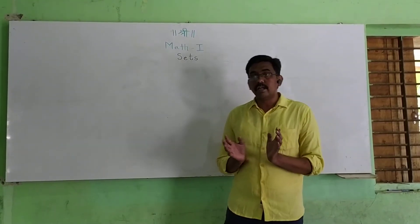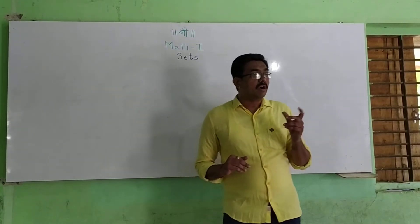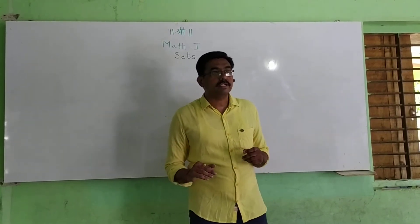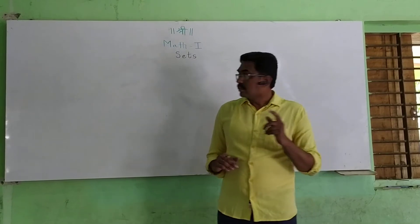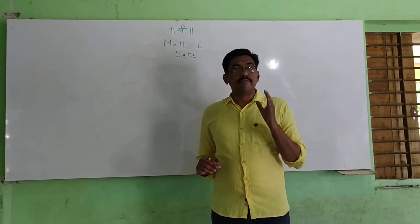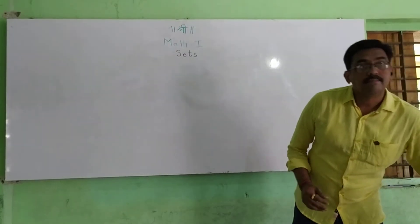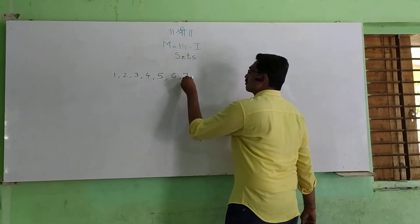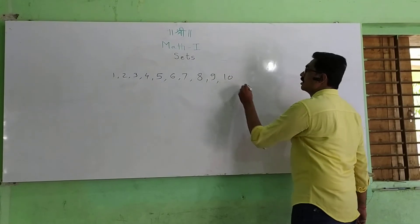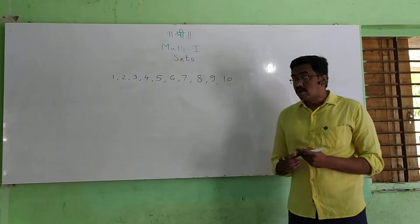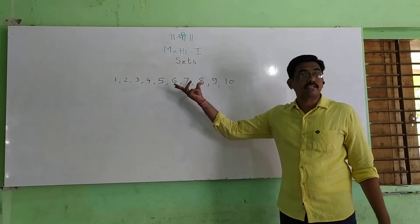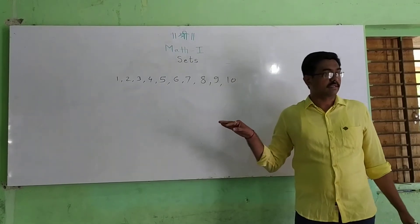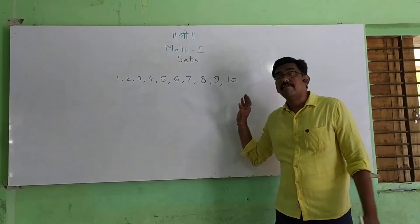What we look here is the collection of objects. Such a collection is called a set. As we know, we can count the numbers. Suppose I am writing this — these are the numbers from one to ten. So what is this? This is a group of numbers. In another way, we call this as a set of numbers.